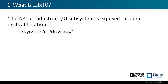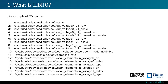The API of IIO subsystems is exposed through SysFS at a specific location, so all IIO devices can be found at this path. For instance, let's say we have one device — it can be found at the path SysFS IIO devices, and then there will be a directory called IIO device 0.